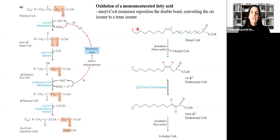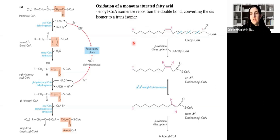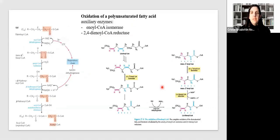We have been talking about the oxidation of saturated fatty acids. For the oxidation of monounsaturated fatty acids, we need the help of an enzyme called enoyl-CoA isomerase, which repositions the double bond, converting the cis isomer to a trans isomer. For the oxidation of polyunsaturated fatty acids, we need two auxiliary enzymes: enoyl-CoA isomerase and 2,4-dienoyl-CoA reductase.